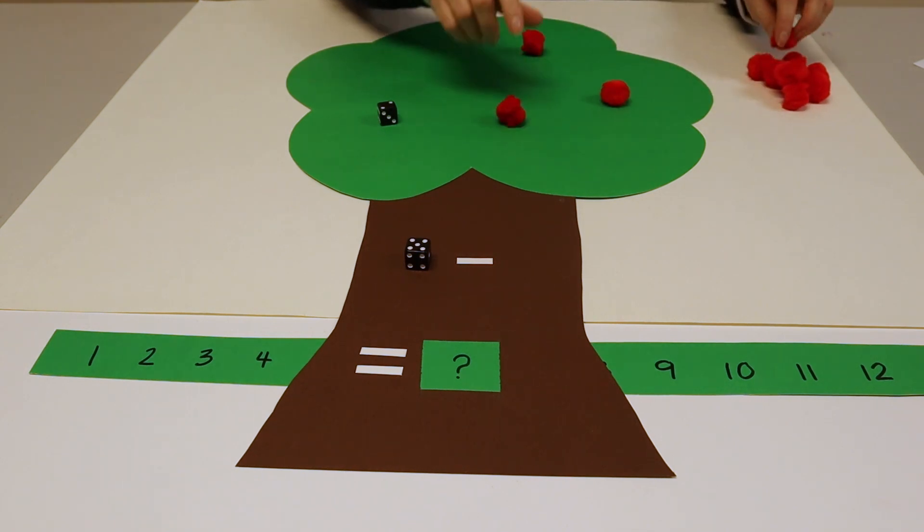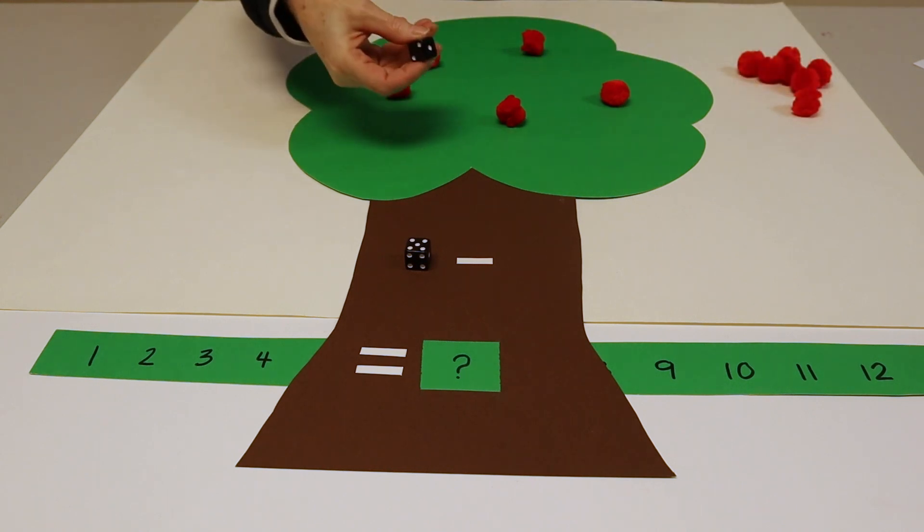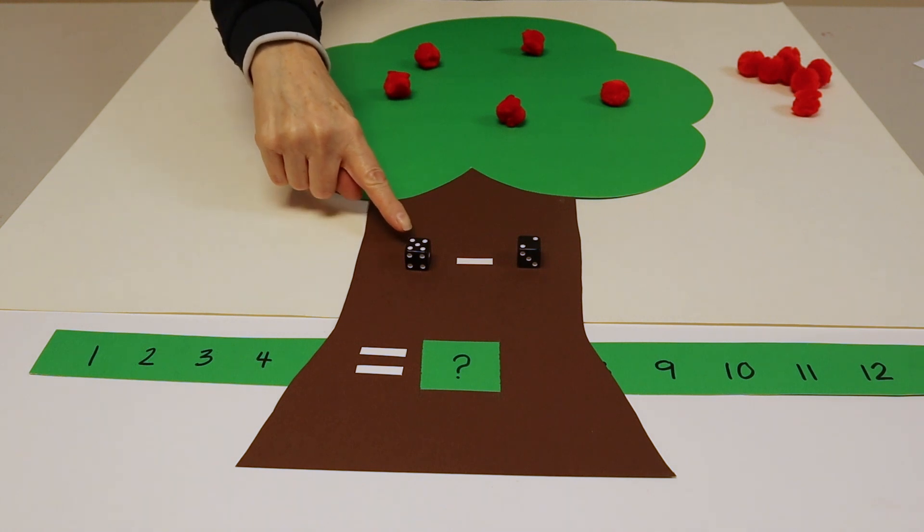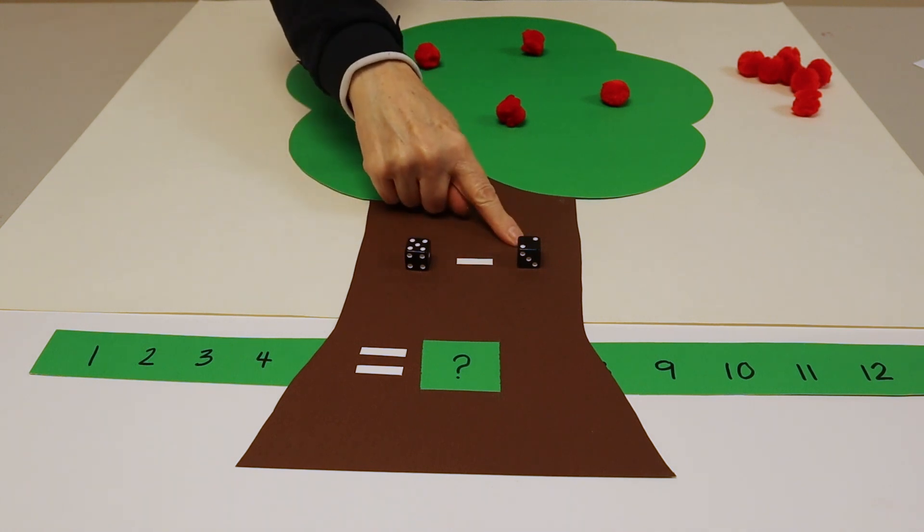One, two, three, four, five. And the other die will go on the other side and together read out the equation five minus two equals.